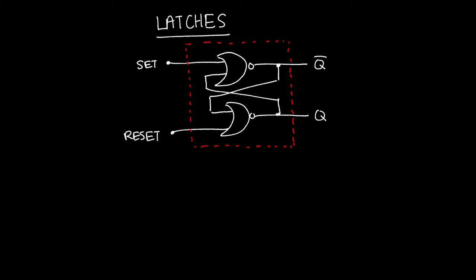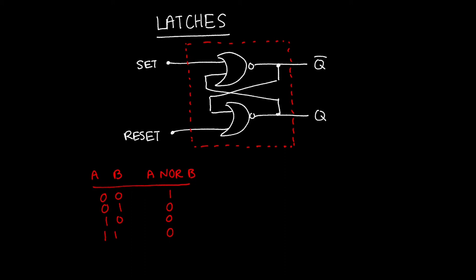It might be instructive to write the truth table for a NOR gate. Let's call the two inputs A and B. The output of A NOR B is always going to be high when both inputs are low, and only when both inputs are low — under no other condition. So let's draw the truth table for this particular configuration. I'm going to write out the inputs: set and reset, and the outputs: Q and Q-bar.